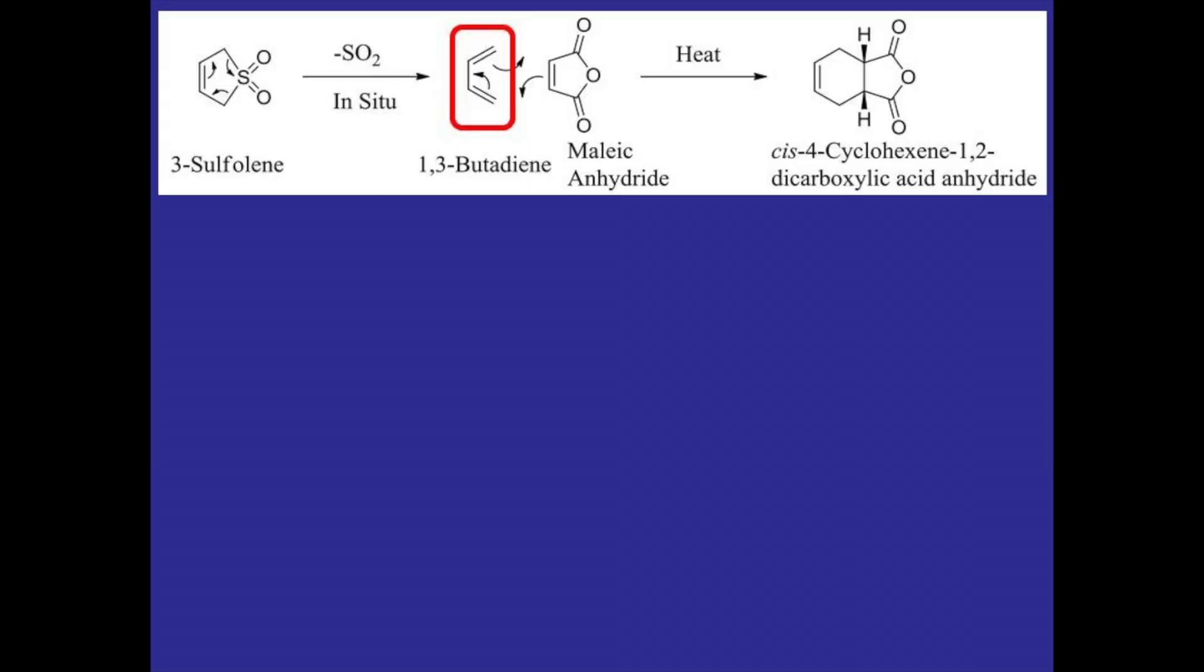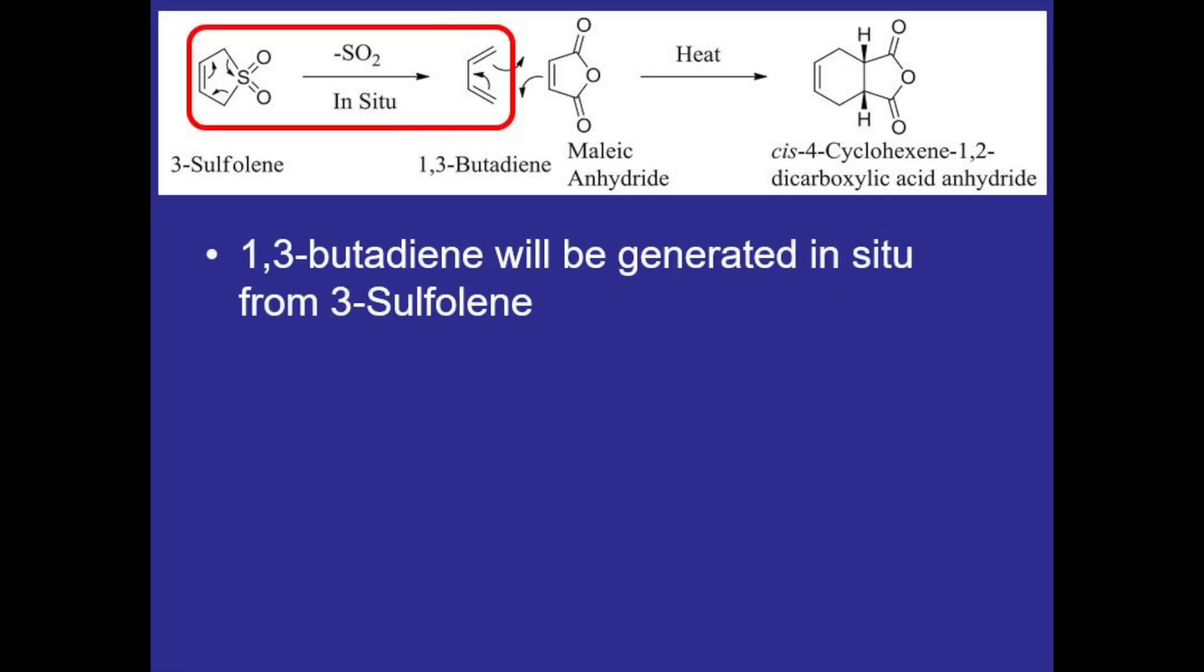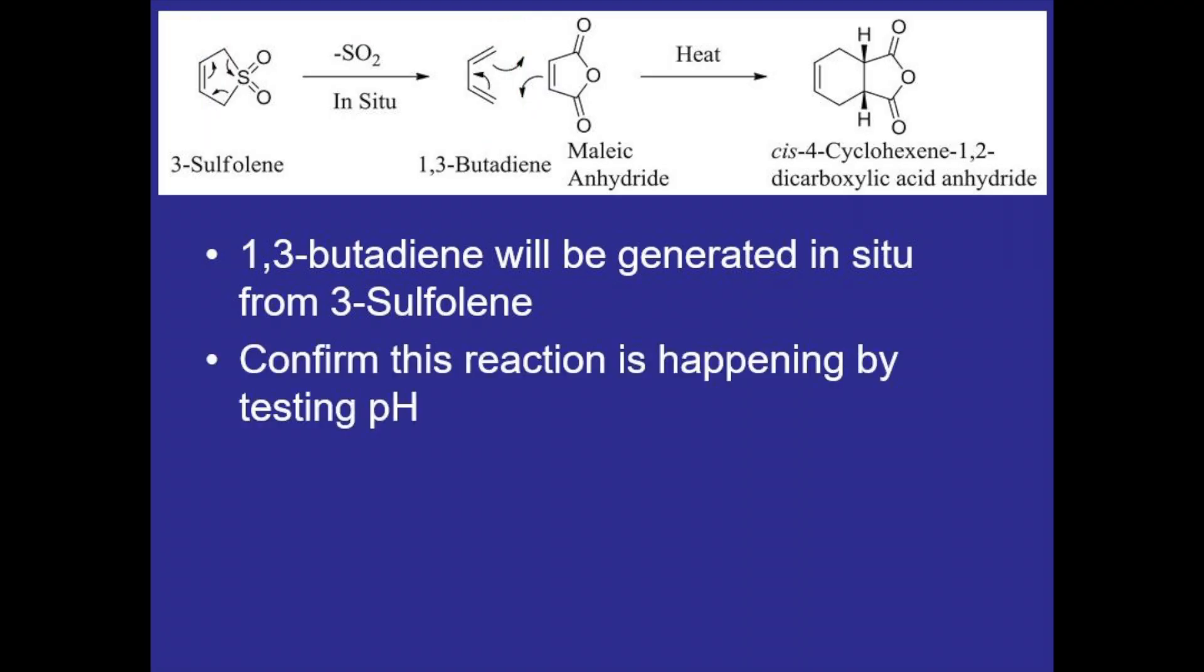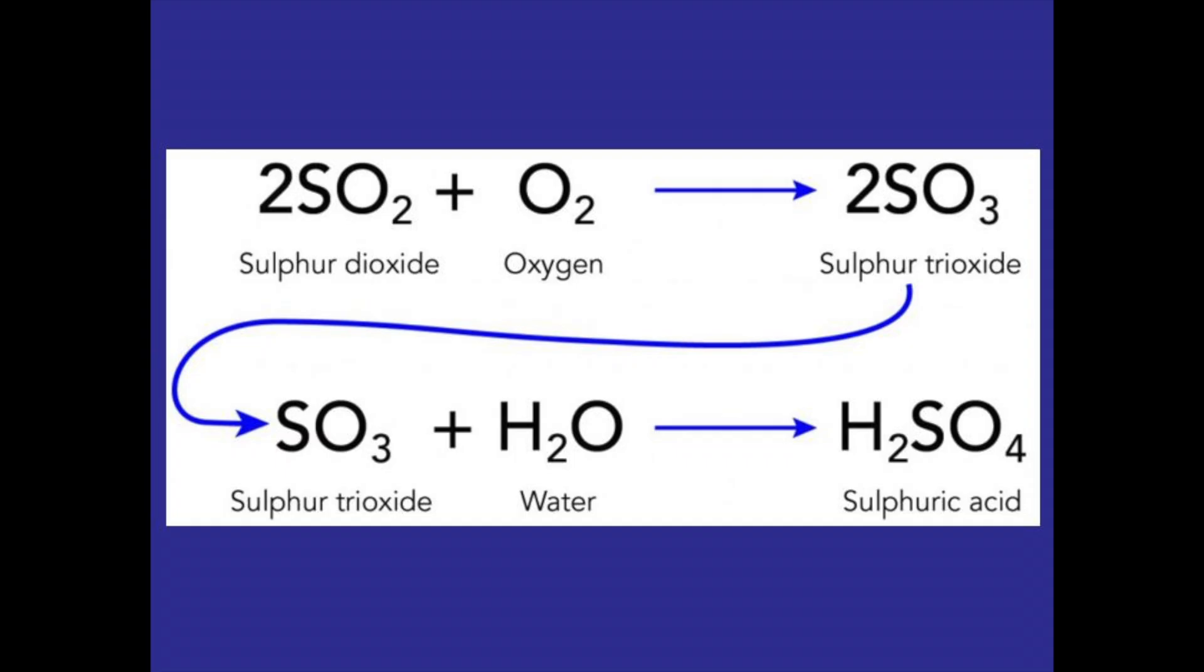The 1,3-butadiene used in this reaction is a gas at room temperature which makes it difficult to measure and handle, so we'll actually be making it in situ using 3-sulfolene as the reagent and we can confirm that this reaction is happening by testing the pH. Sulfur dioxide is released in this reverse Diels-Alder type reaction and as it reacts with oxygen and water it'll eventually turn into sulfuric acid which we can then pick up on a pH strip.